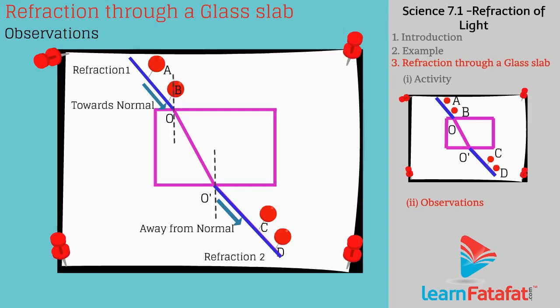This suggests that when light ray passes from rarer medium to denser medium, it bends towards the normal. And when light ray passes from denser medium to rarer medium, it bends away from the normal.